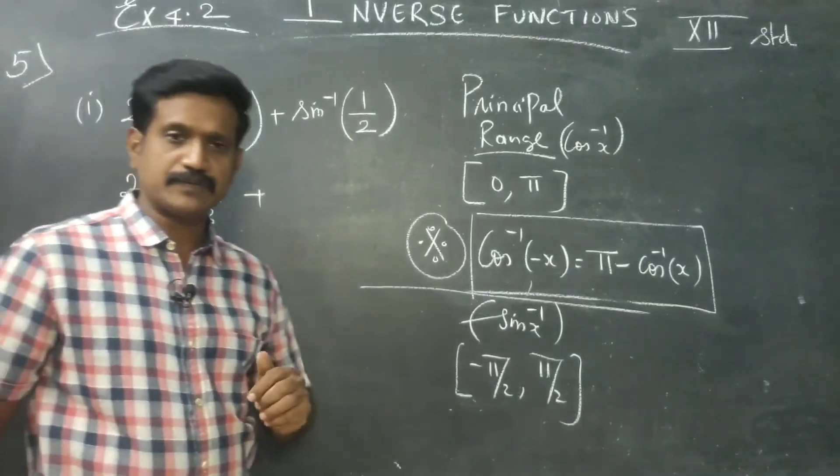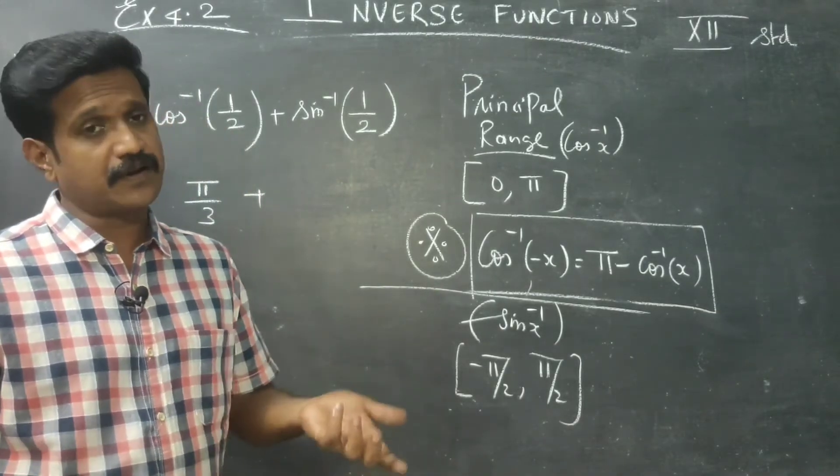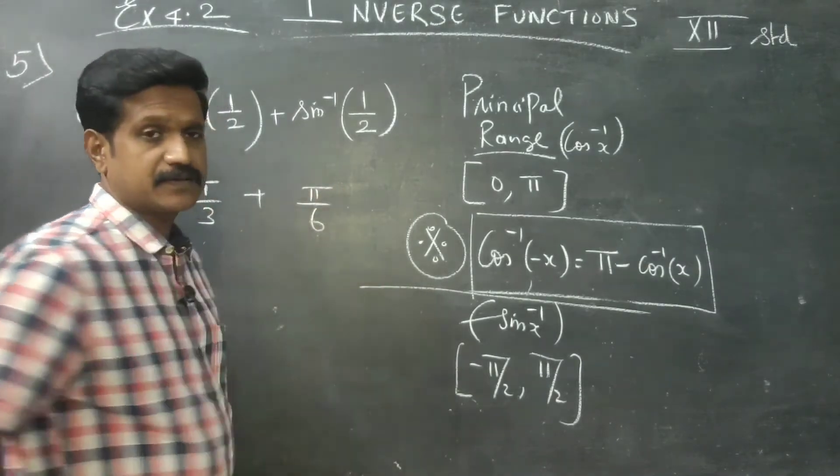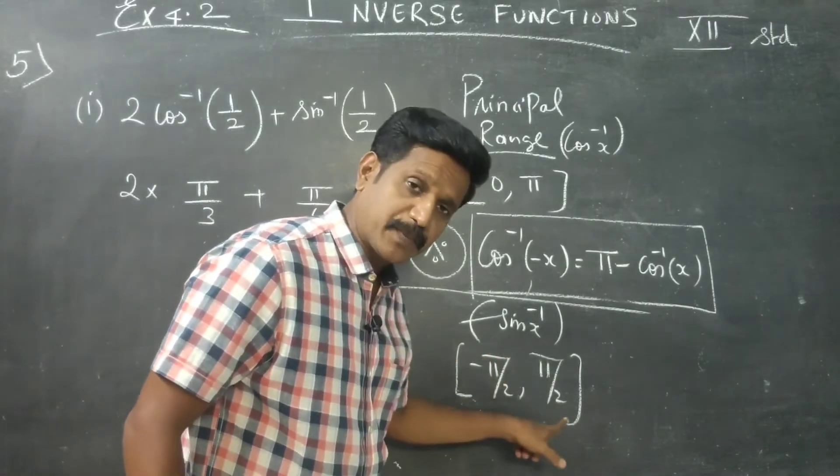Plus sin inverse 1 by 2. Sin inverse 1 by 2, 30 degrees is pi by 6. Am I right? Pi by 6. 30 degrees in the range is minus 90 to plus 90.